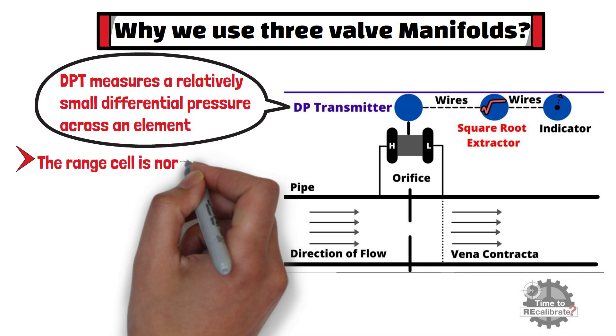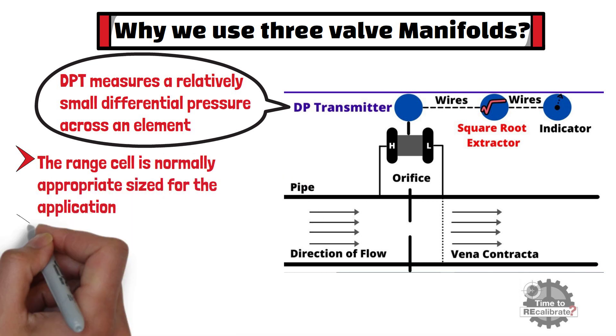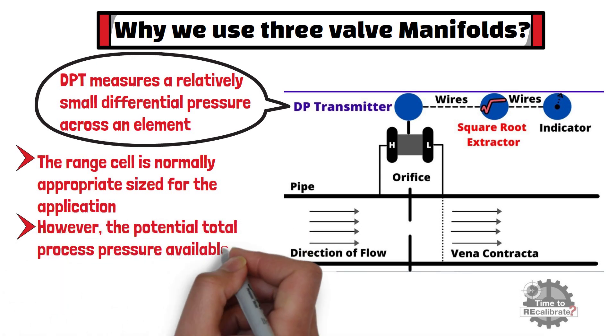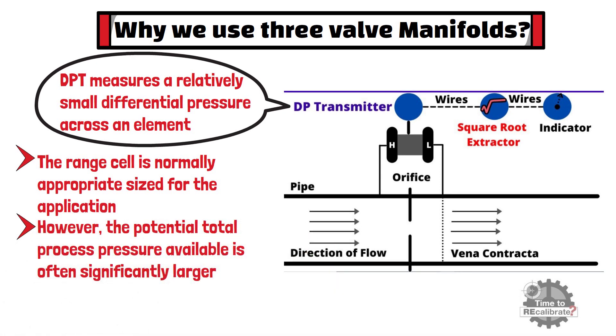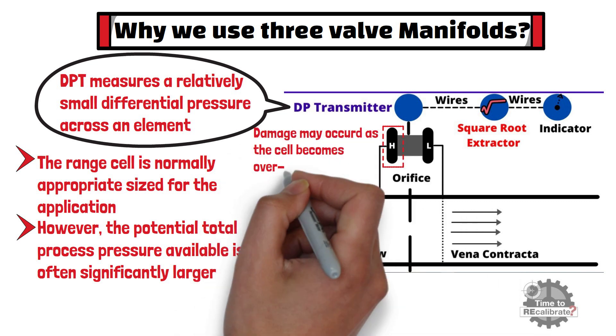The range cell used within the transmitter is normally appropriately sized for the application. However, the potential total process pressure available is often significantly larger, so much so in fact, that if the total pressure were to be applied to one side of the transmitter only, damage may occur as the cell or capsule becomes overranged.